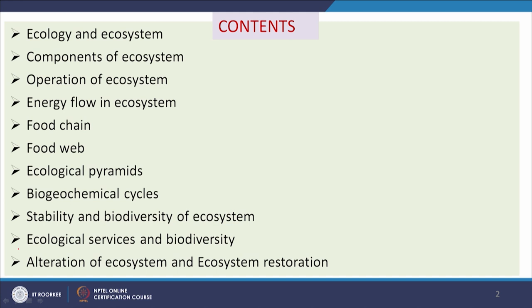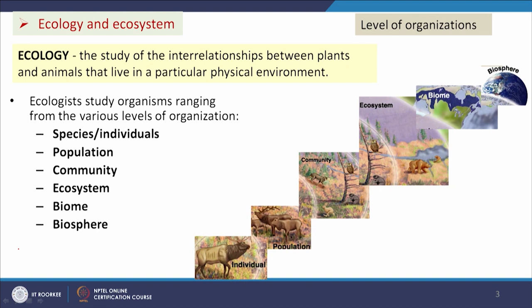What is ecology and ecosystem? Ecology is the study of the interrelationship between plants and animals that live in a particular physical environment. Ecologists study organisms ranging from various levels of organization: individual, population, community, ecosystem, biome, and biosphere. These are the levels of organization.